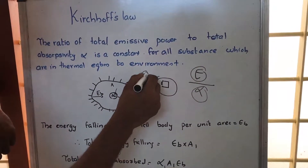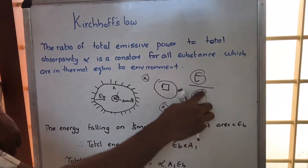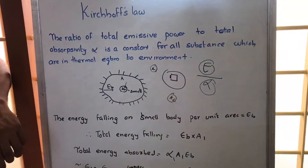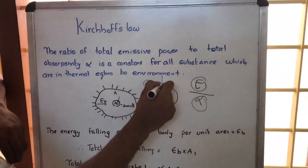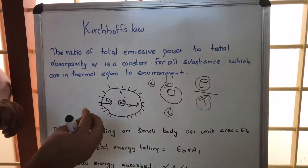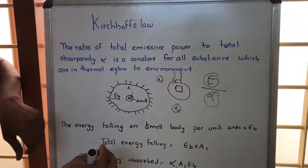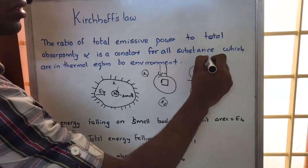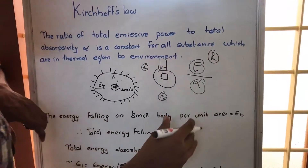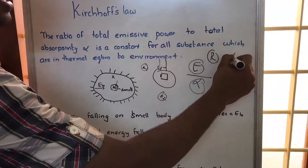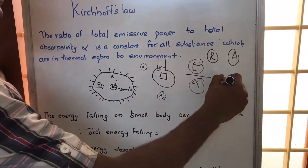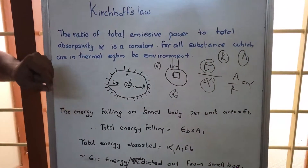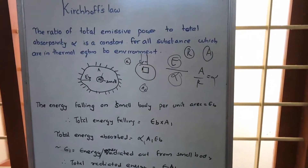That means if you have a small body A1 and small body A2 and we find E by alpha for both objects, then they will be the same. Absorptivity means that when radiation falls on a material, a part of that radiation is absorbed. If R is the amount of radiation falling on the material and A is the amount absorbed, then alpha equals A divided by R — alpha denotes the fraction of radiation absorbed by the given material.